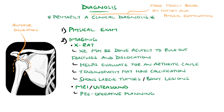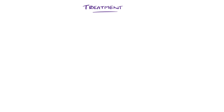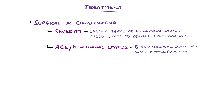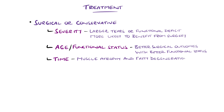They may also be done in those not responding to over six weeks of dedicated therapy. Overall, management may be surgical or conservative, with the decision affected by multiple factors including severity — where larger tears with more functional disability are more likely to benefit from surgery — age and functional status, and time. With more time after injury, there can be muscle atrophy and replacement with fatty tissue, termed fatty degeneration, which is correlated with worse surgical outcomes and a higher re-tear rate.